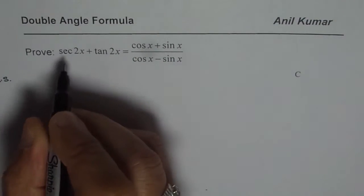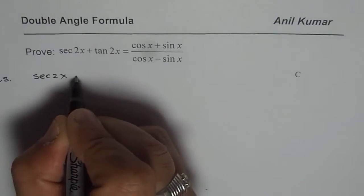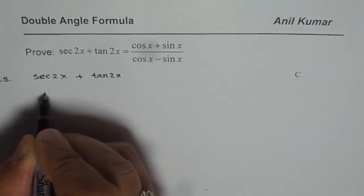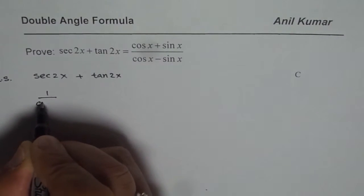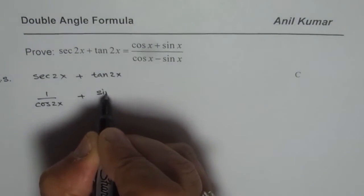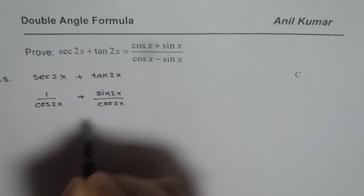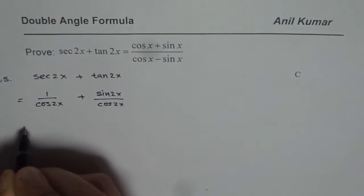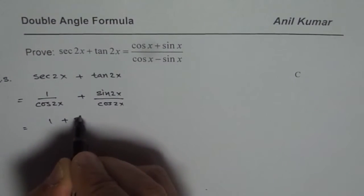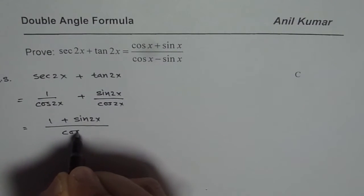If I write secant 2x plus tan 2x, secant 2x is 1 over cos 2x and tan 2x is sin 2x over cos 2x. So cos 2x is common. We can write this as 1 plus sin 2x divided by cos 2x.